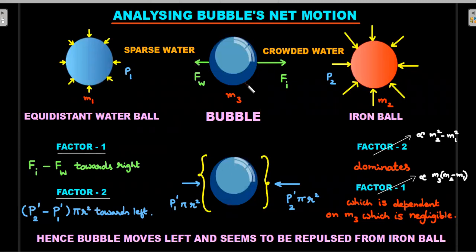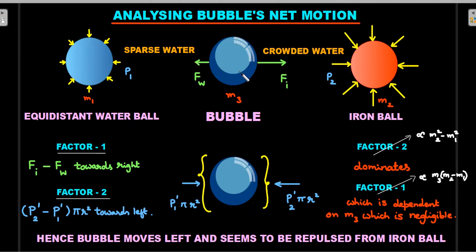You might think the pressure should be uniform, so there should be no net force — and that is where the trick in this question lies. To symmetrically solve this problem, I visualize a water ball of the same size placed at equal distance. I argue that the rest of this entire water body puts zero force on it because of symmetry. So the problem boils down to calculating the net force on the bubble due to this equidistant water ball and the iron ball, plus the pressure forces.